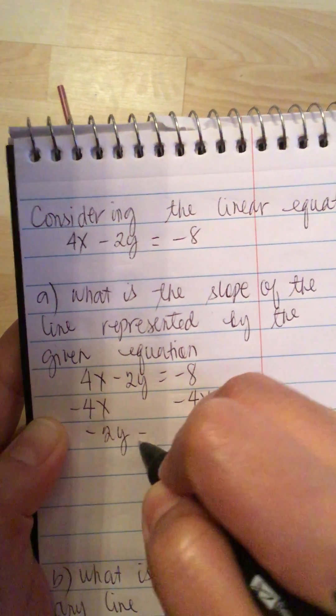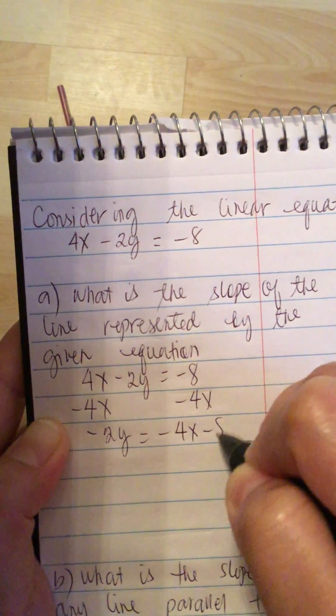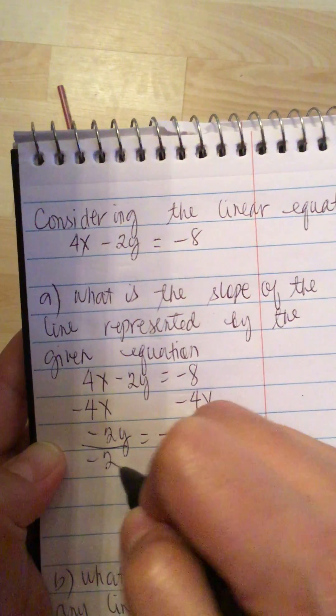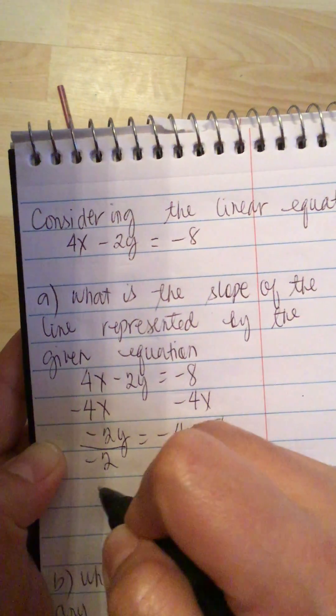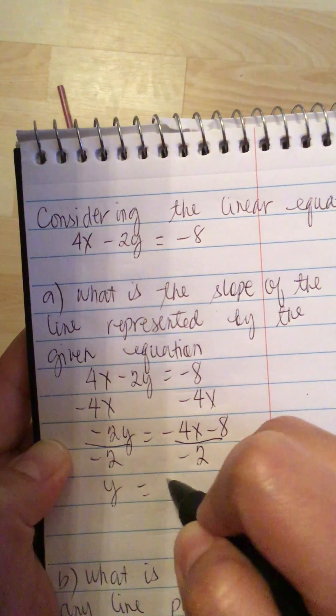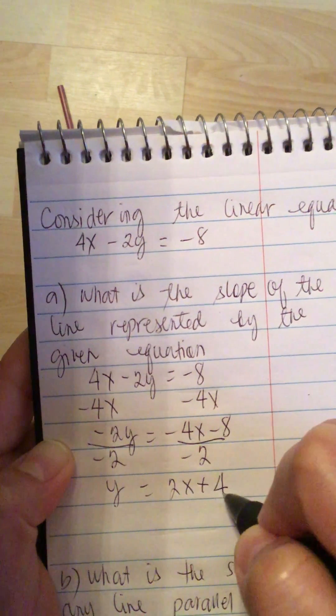So we have minus 2y is equal to minus 4x minus 8. So now we divide by minus 2 on both sides. So y is equal to 2x plus 4.